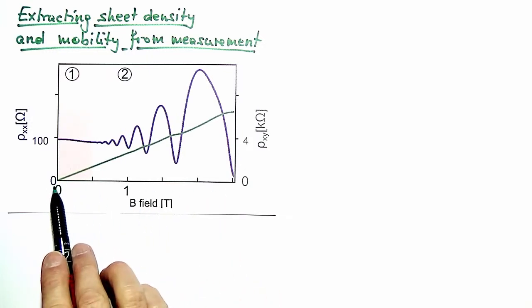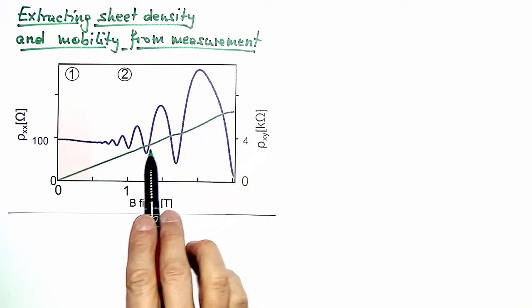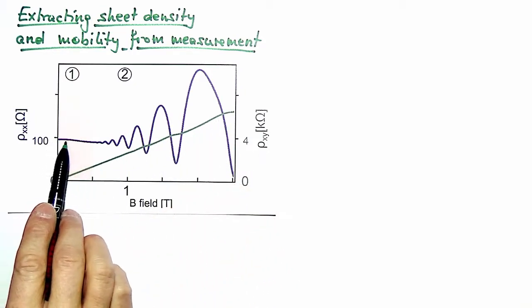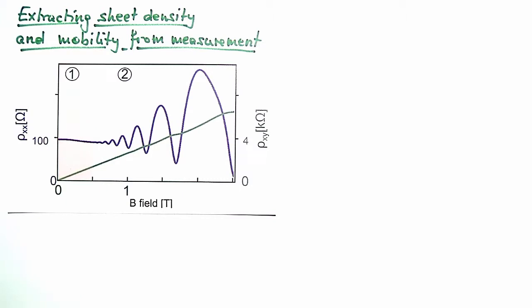We see this curve is the Hall resistivity rho_xy and this curve is the longitudinal resistivity rho_xx.